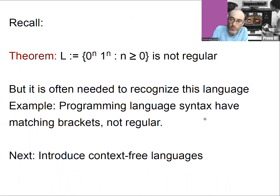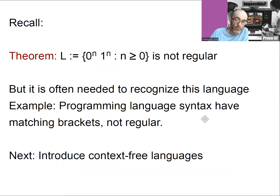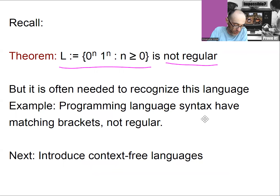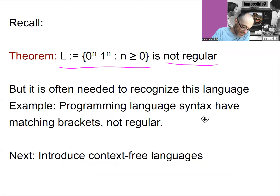So let's start with a motivation. Recall that we saw this language — the language of strings 0 to the n, 1 to the n, for some n — is not regular. How do we prove that? We use the pumping lemma. However, this is such a basic language, and very similar things are needed in many programming languages.